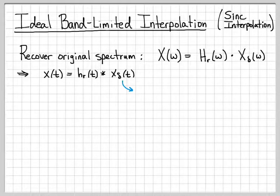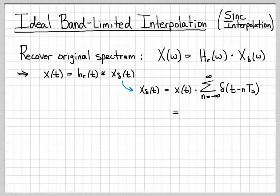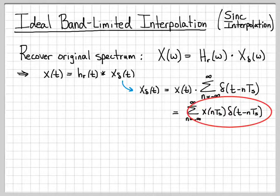We know what x_delta(t) is. We create the impulse sampled signal by taking our signal x(t) and multiplying it by an infinite impulse train — that's one way to write x_delta(t). Equivalently, this really just takes each impulse and weights it by the value of x(t) at the location of the impulse, so we can also write it in that summation form.